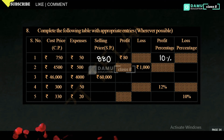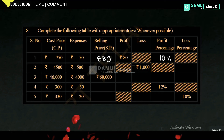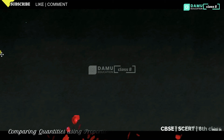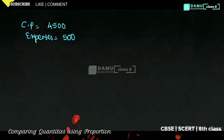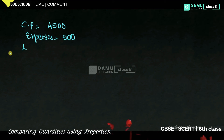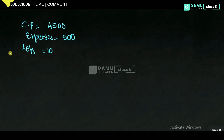In the next question, cost price is given as 4500 and expenses are given as 500. So cost price will be equal to 4500, then expenses will be equal to 500. Also, loss is given as 1000, so loss will be equal to 1000.